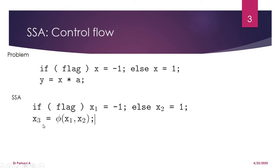Based on the condition, execution is either true or false, so x value will become minus one or one. We need to write a dynamic function phi, which is passed with the values x1 and x2. It will either return x1 or x2 according to the flag value, and that value will be assigned to x3.